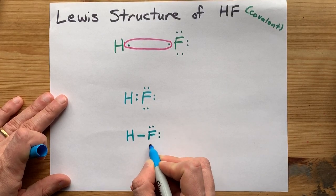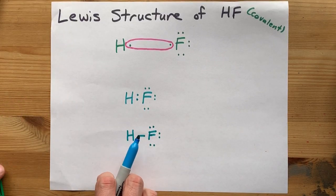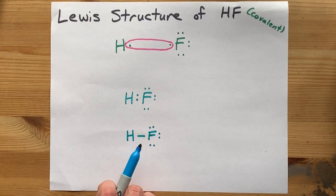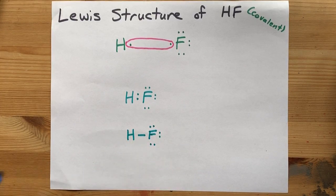We often show the extra lone pairs on an atom that has them, and this is your complete Lewis structure. It is a sharing of electrons, and we show covalent bonds with these single lines. Done.